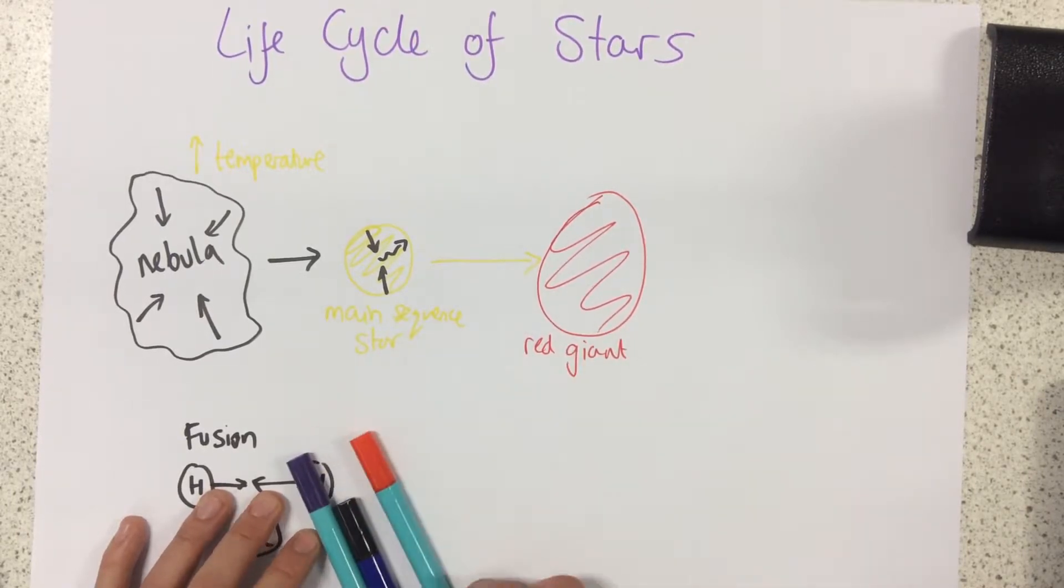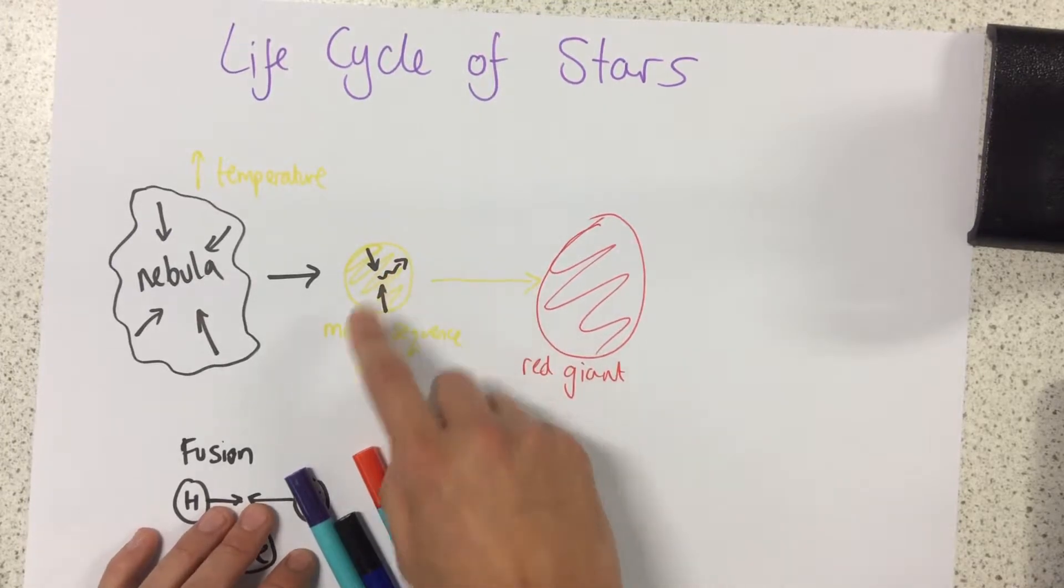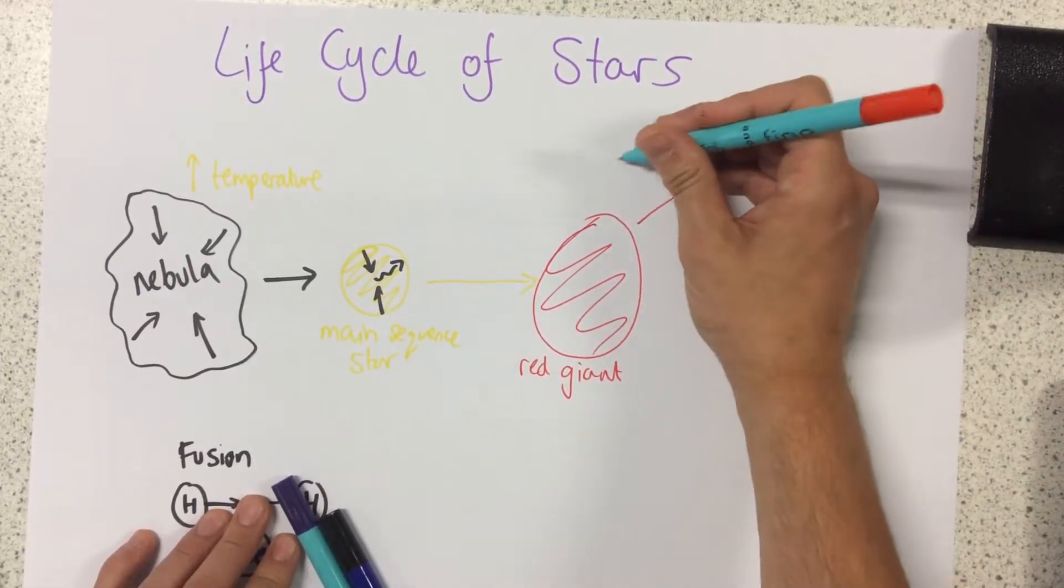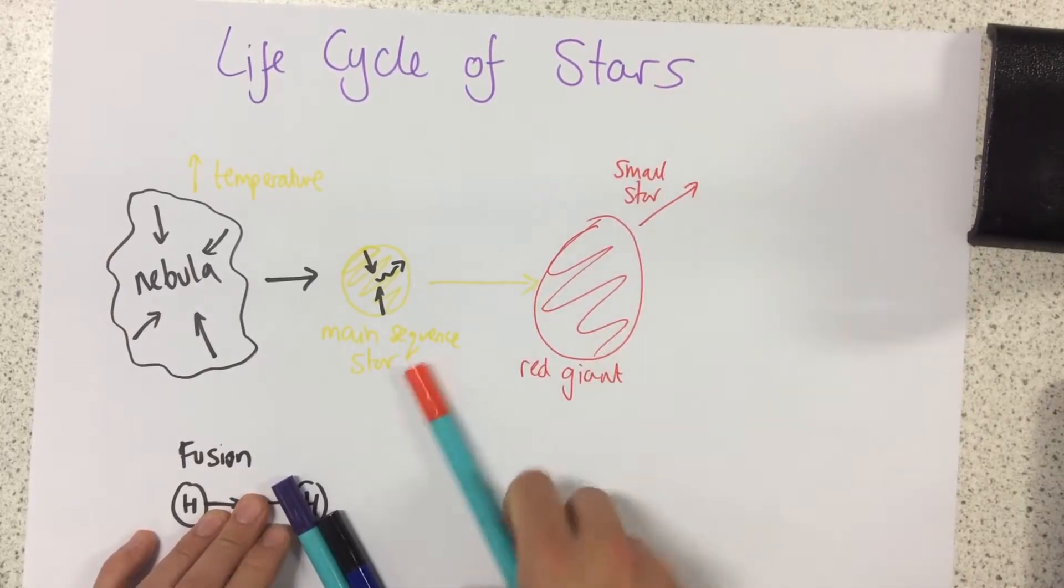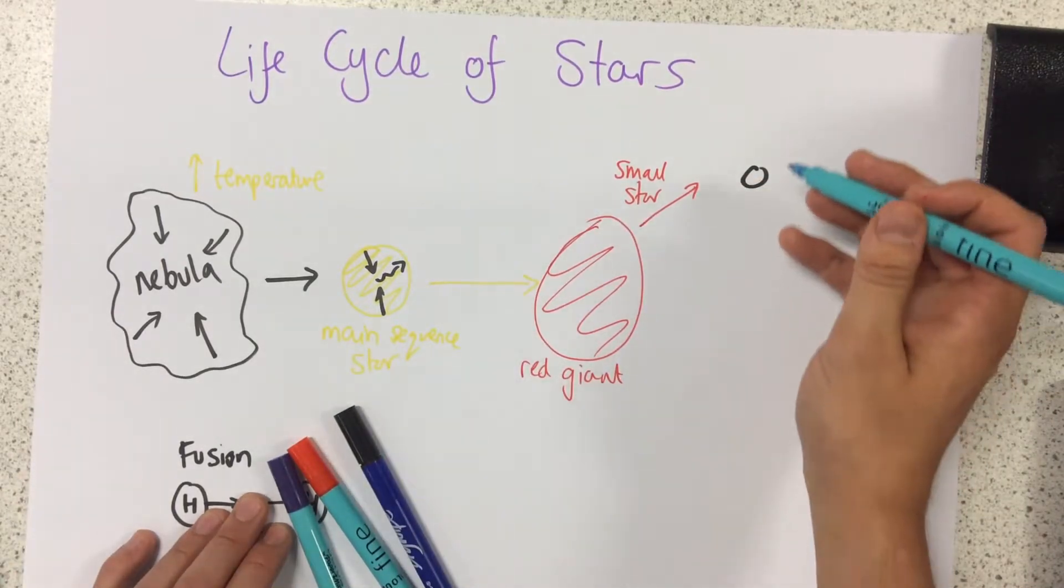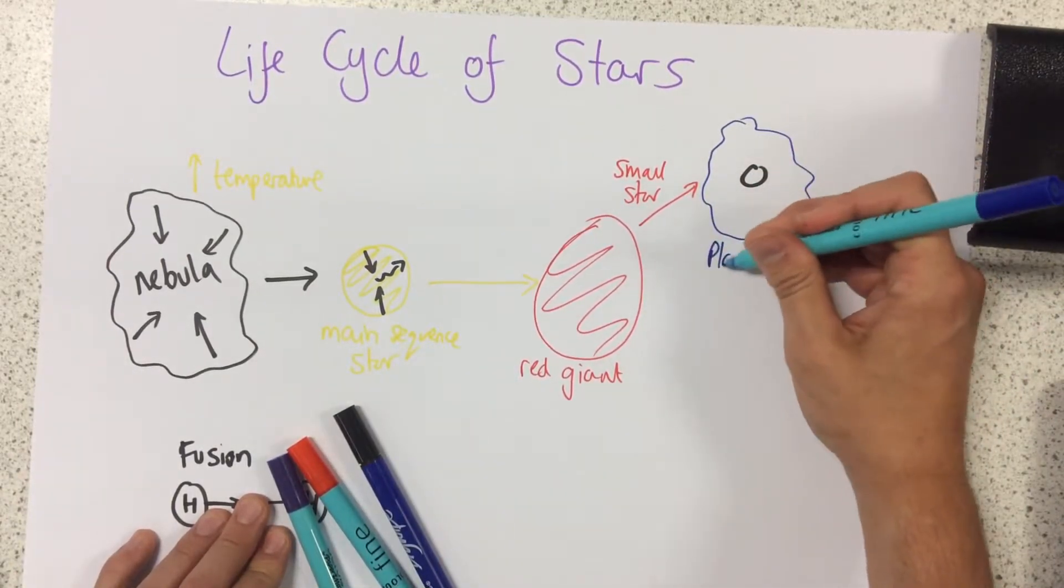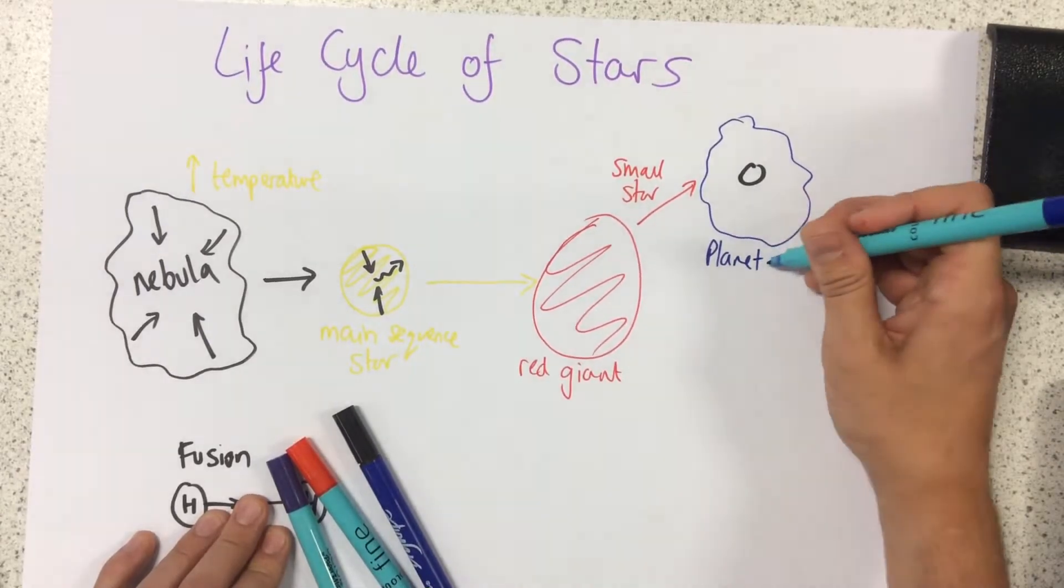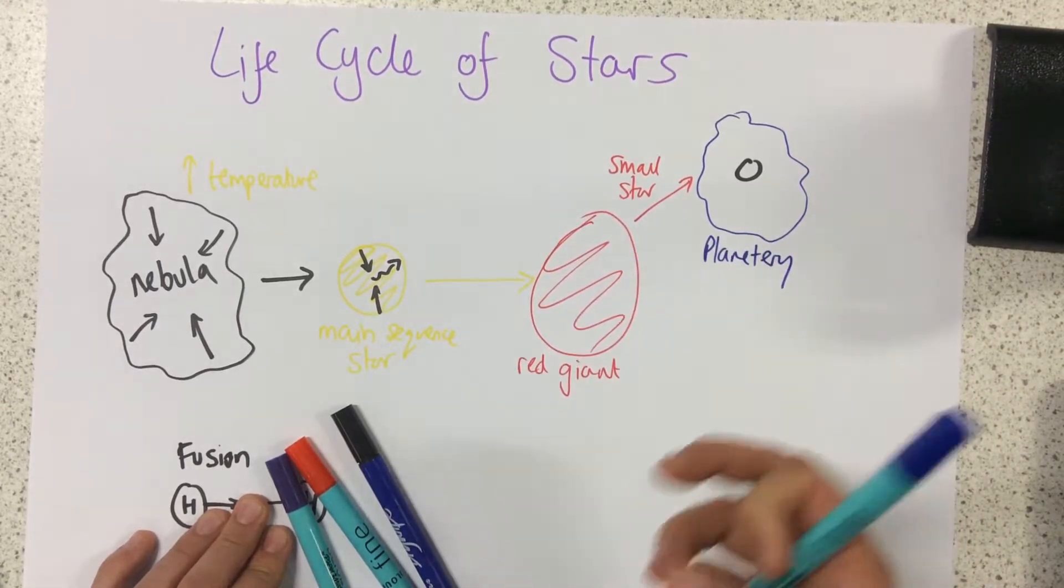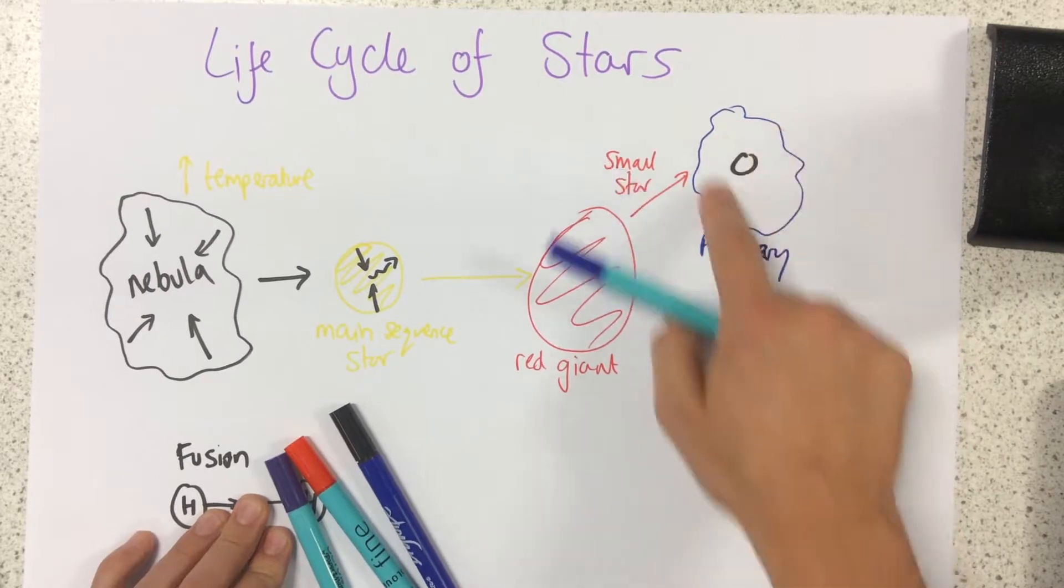At this point, we've got two different choices of what can happen depending upon the size of the original star. If we started with quite a small star, we get something formed called a planetary nebula. Whenever we hear the word nebula, we know that it's to do with dust and gas.